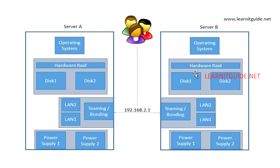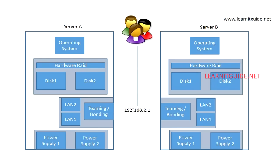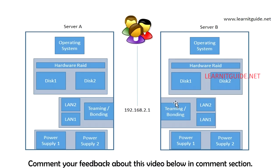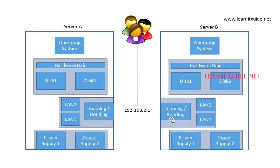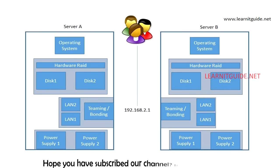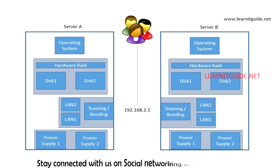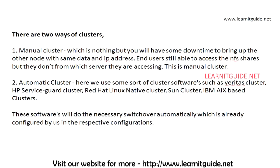In a manual cluster, if my server with IP 2.1 goes down, I log into the standby server, configure the 2.1 IP address on it, and since I have the same data on that server, clients can access the NFS share via 2.1 again. This requires some minimal downtime — around 5 to 10 minutes to manually configure the IP address.